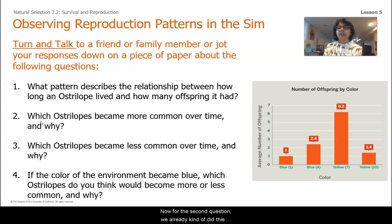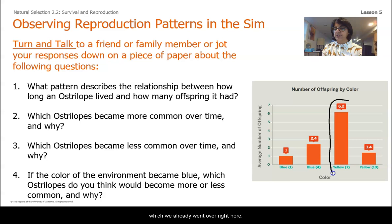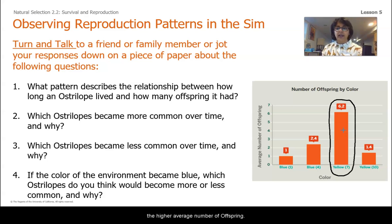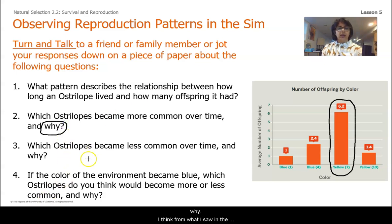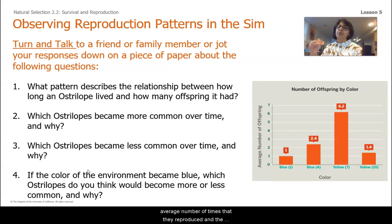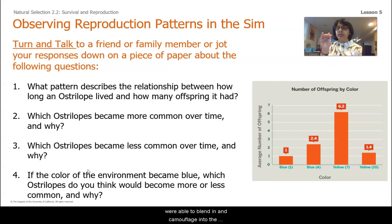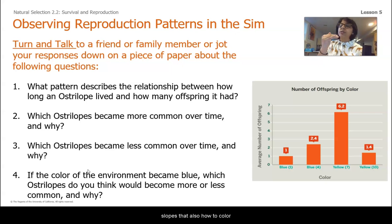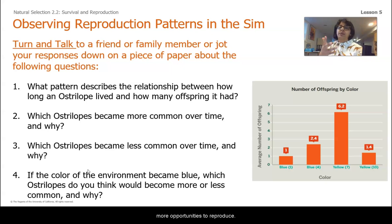For question two — which Ostrilopes became more common over time and why — those were the Ostrilopes with a yellow color of seven. Those yellow color-seven Ostrilopes had the highest average number of times that they reproduced and thus the higher average number of offspring. The reason why is that they were able to blend in and camouflage into the environment. In our simulation, the environment was a color level of seven, so naturally those Ostrilopes with a color of seven were able to blend in more, escape those carnathons for a longer duration, and therefore had more opportunities to reproduce.